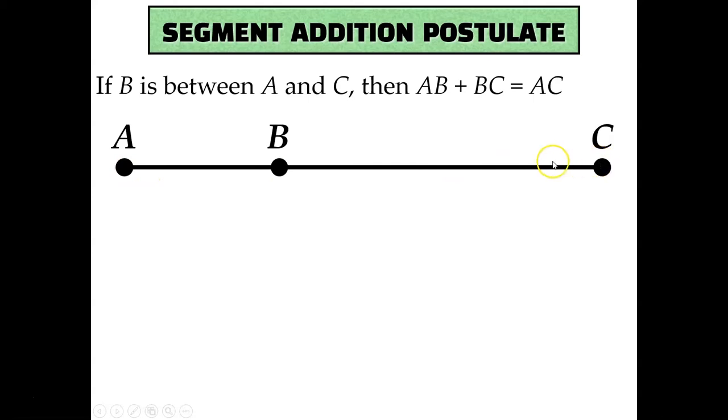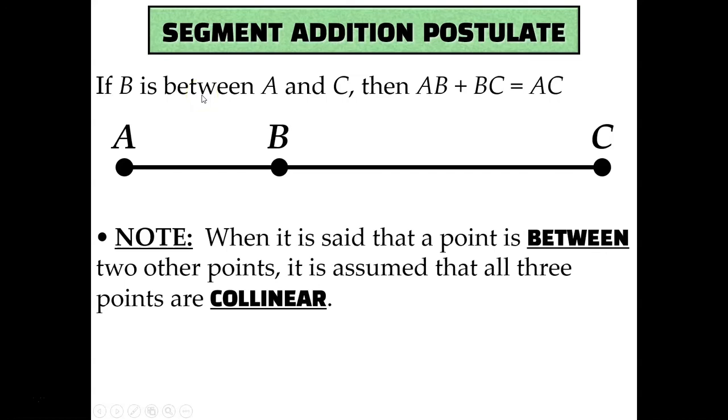Now there's one important word in this postulate, and that's the word between. Whenever it's said that a point is between two other points, it is assumed that all three points are collinear. So in order to use the segment addition postulate, all three points must be on the same line.